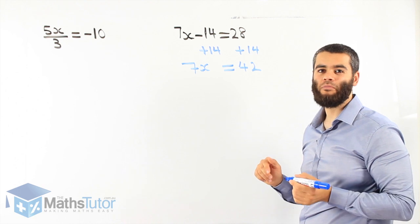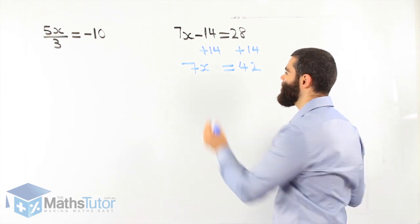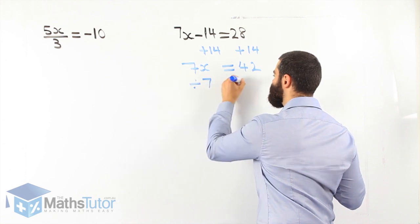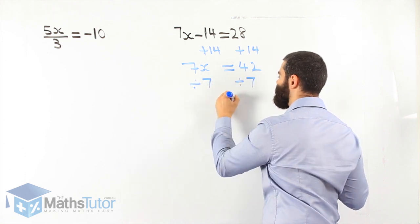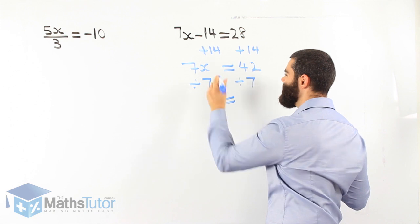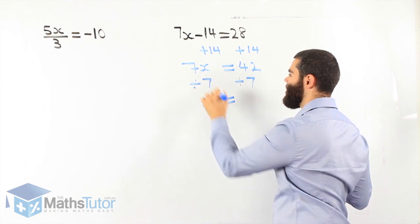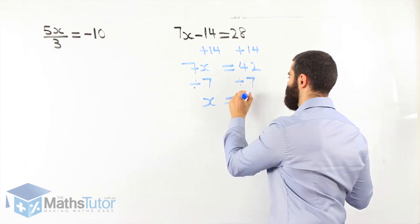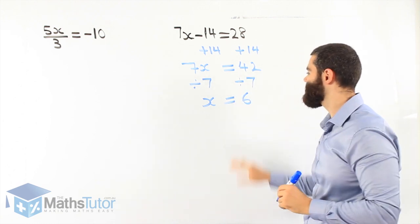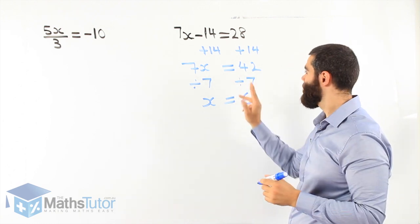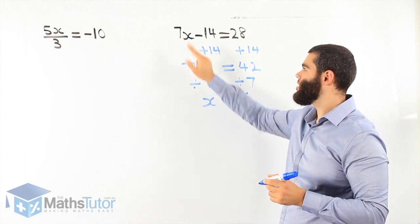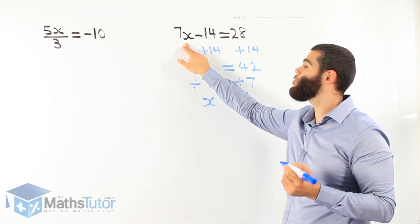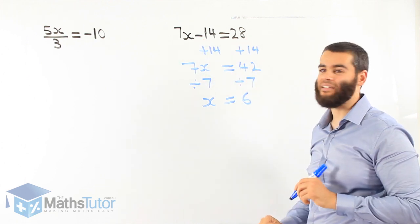Now what do we do? It's the last step — basically a one-step equation. 7x is 7 times x, so divide by 7 on both sides. 7 divided by 7 is just 1x. 42 divided by 7 — our answer is 6. Let's substitute: 7 times 6 is 42, and 42 take away 14 is 28. Correct!